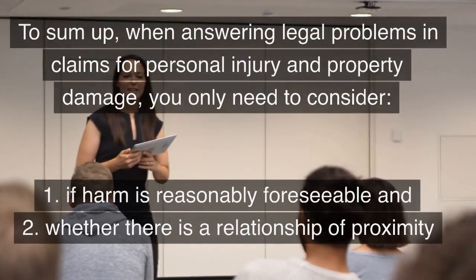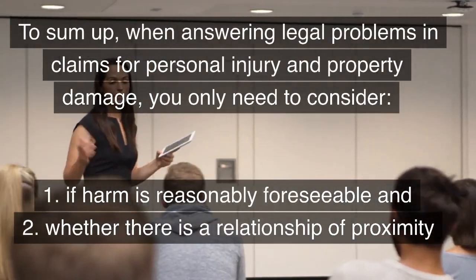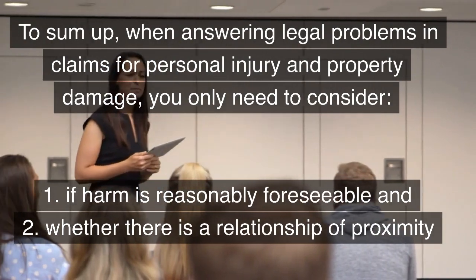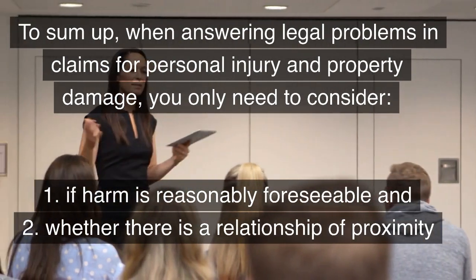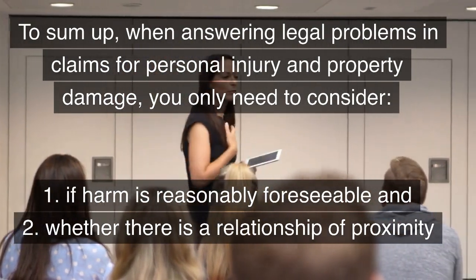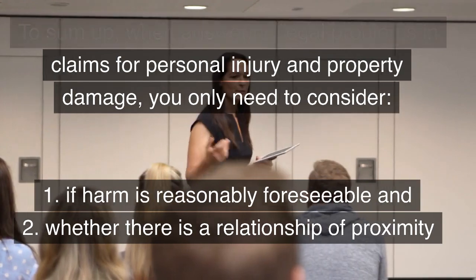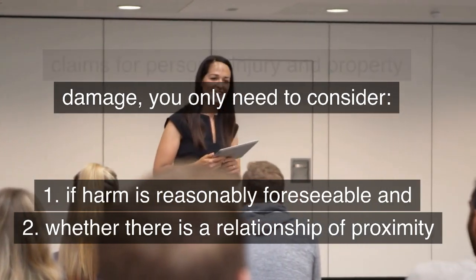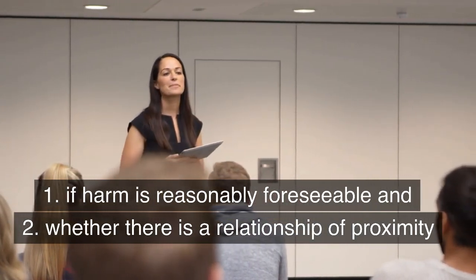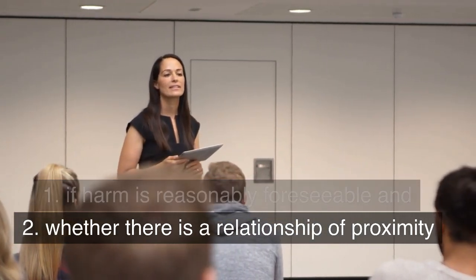To sum up, when answering legal problems in claims for personal injury and property damage, you only need to consider: one, if harm is reasonably foreseeable, and two, whether there is a relationship of proximity.